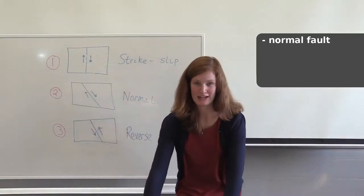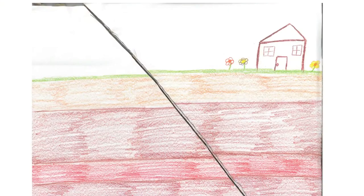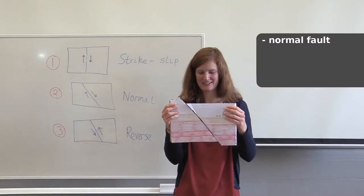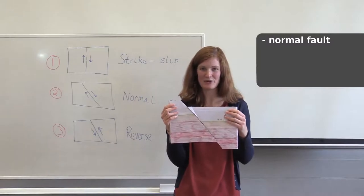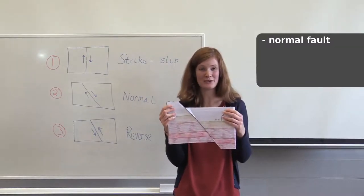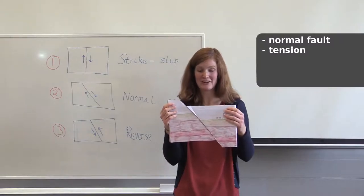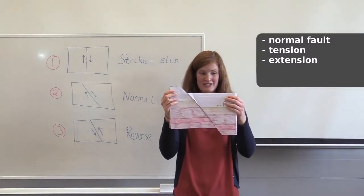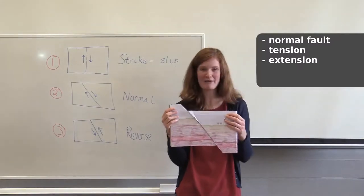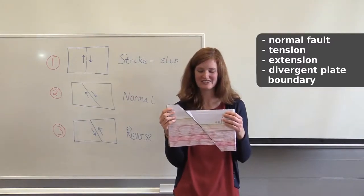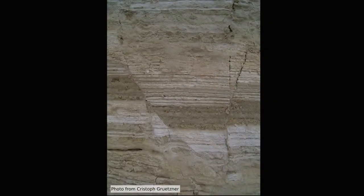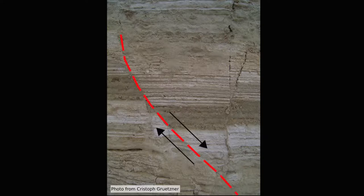Group two made a normal fault. The rock on top of the fault has moved down and you can see the layers have been offset. The type of stress associated with normal faults is tension, and it causes lengthening of the crust — you can see that your model has gotten longer. The type of plate boundary associated with this is divergent. Here is a picture of a normal fault in the field that my colleague Christophe took — like in your model, you can see the horizontal layers of rock, and the horizontal layers have been offset. This is a normal fault, just like your model.